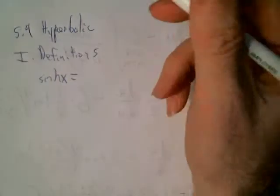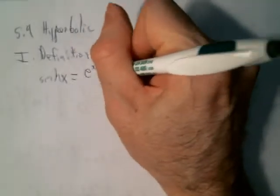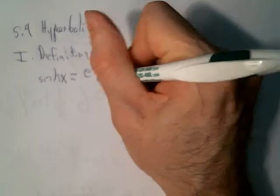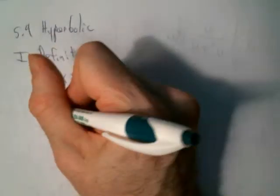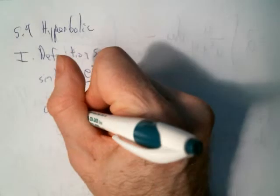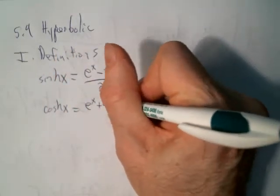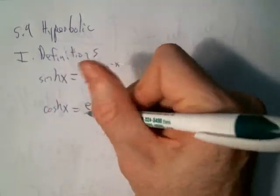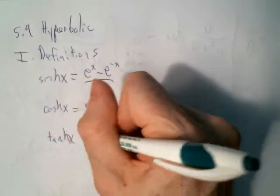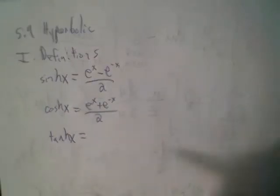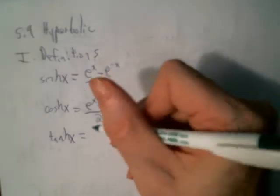Hyperbolic sine, or sinh, is (e^x minus e^(-x)) over 2. Hyperbolic cosine, or cosh, is (e^x plus e^(-x)) over 2. Hyperbolic tangent, or tanh, is the ratio of sinh over cosh.